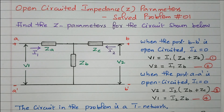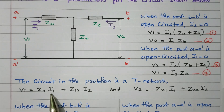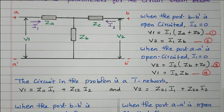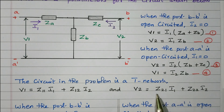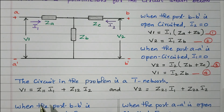From these four equations we can find the Z parameters one by one. The circuit in this problem is a T network. The generalized equation is V1 = Z11·I1 + Z12·I2, where Z11 is the open circuit input impedance and Z12 is the open circuit reverse transfer impedance. Similarly, V2 = Z21·I1 + Z22·I2, where Z21 is the open circuit forward transfer impedance and Z22 is the open circuit output impedance, because 2 refers to the output port and 1 refers to the input port. We need to find Z11, Z12, Z21, and Z22.